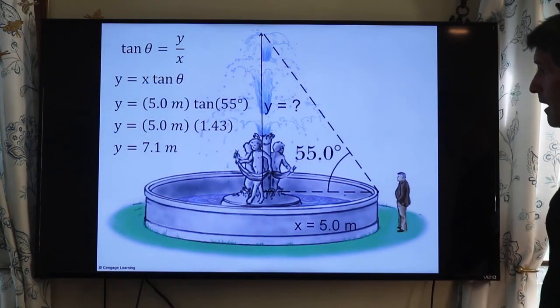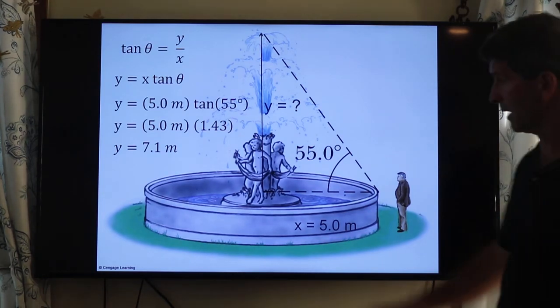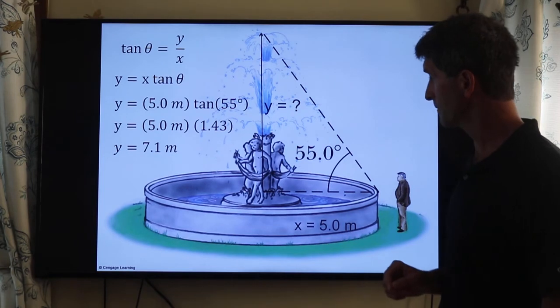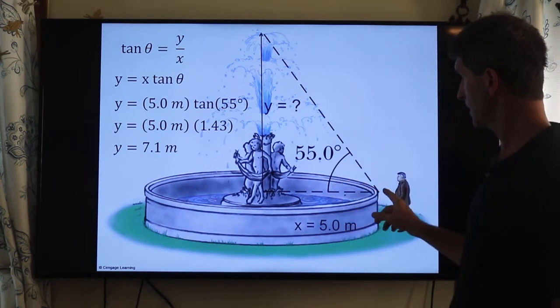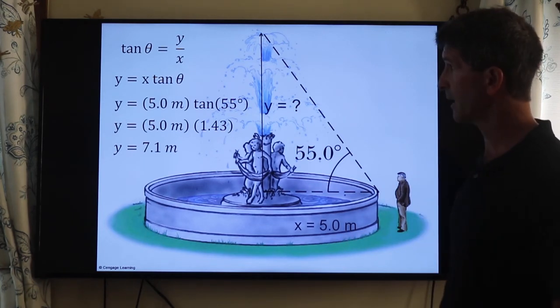Here's an example right here. I want to find out the height of this fountain. I know the radius of the base is 5 meters. I know the angle that I sight from the edge to the top of the fountain is 55 degrees.